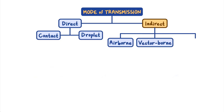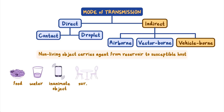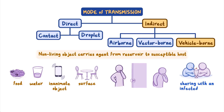The third mode of indirect transmission is vehicle-borne. Unlike a vector, which is living, a vehicle is a non-living object that can carry an agent from its reservoir to a susceptible host. This vehicle may be food, water, an inanimate object, or surface. Depending on the agent and the vehicle, the agent may continue to grow and multiply between hosts. For example, if a person coughs or sneezes into their hand and then grabs a doorknob, the doorknob can become a vehicle to pass the agent to the next person who uses the doorknob then touches their mouth or nose or rubs their eyes. Vehicle-borne transmission can also happen when someone who is infected shares a drink, computer, phone, or other inanimate object with a friend, or when a food item becomes contaminated with bacteria, such as salmonella.